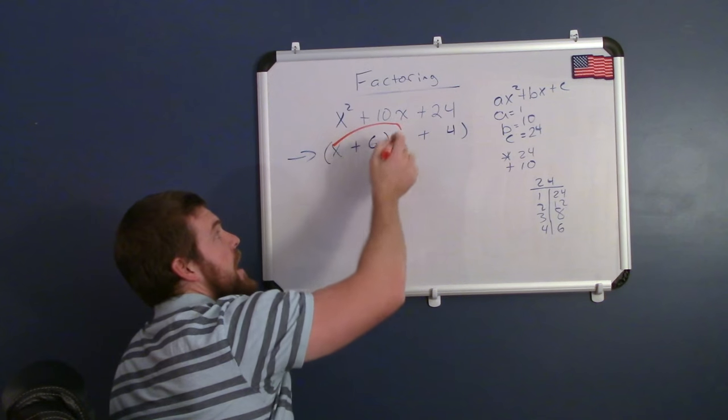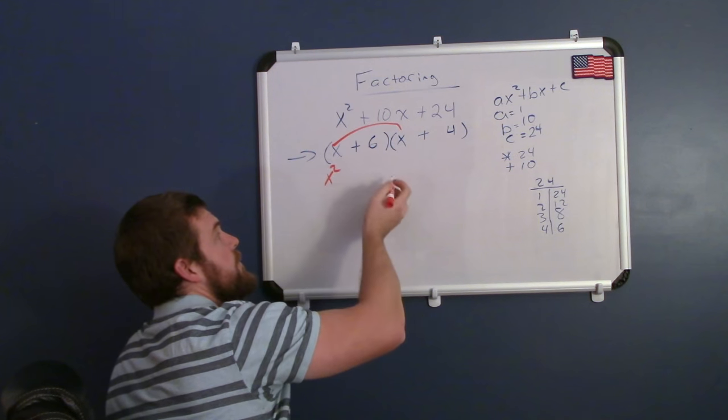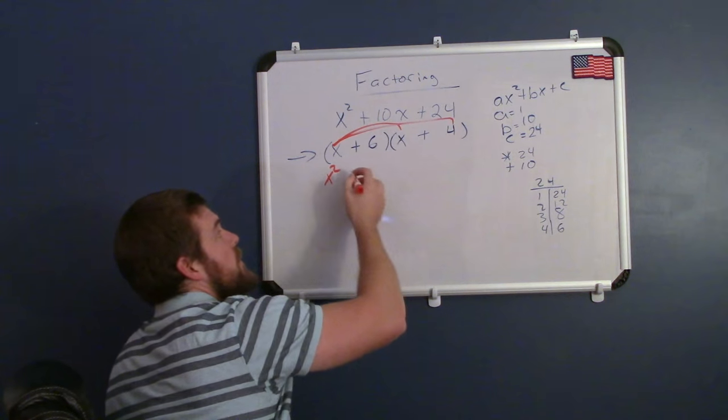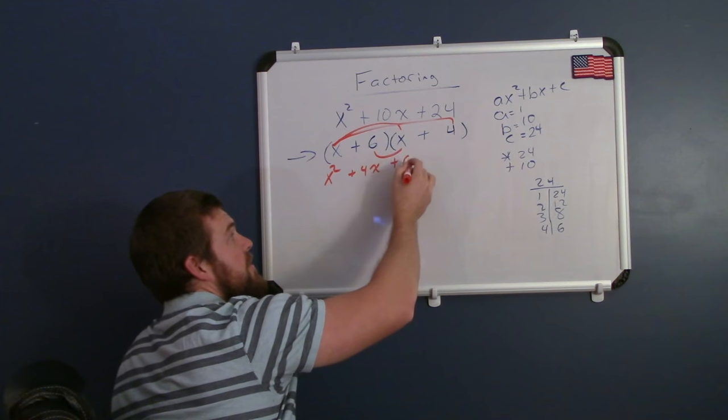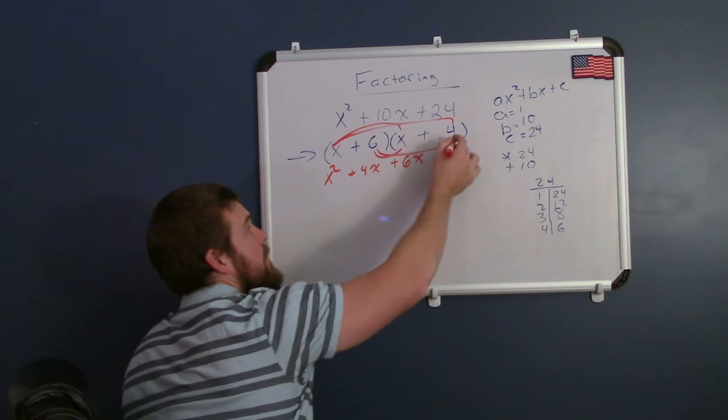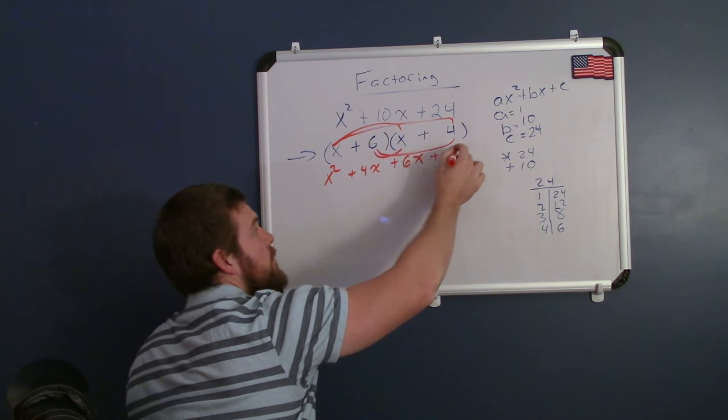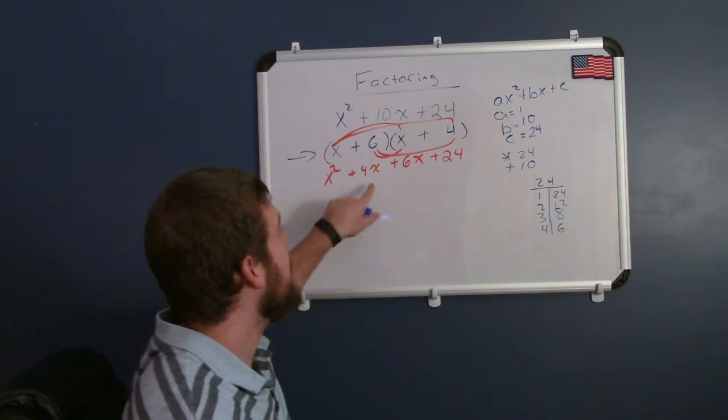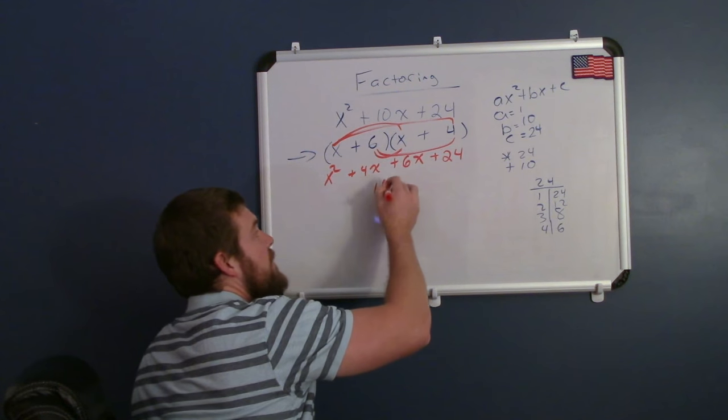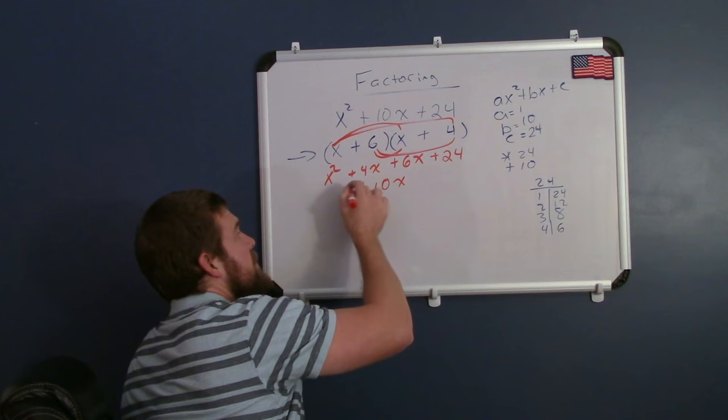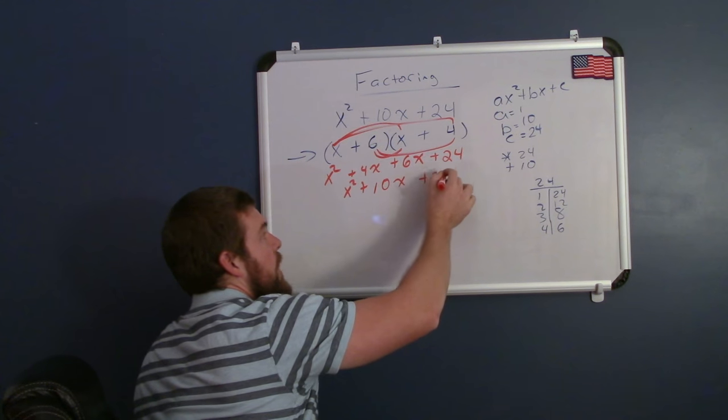So I take x times x, that gives me the x squared. x times 4 is a positive 4x. x times 6, or 6 times x, is 6x, and 6 times 4 is a positive 24. I now can simplify this. 4x plus 6x gives me that 10x here in the middle. The x squared just comes down and the 24 is here on the right.